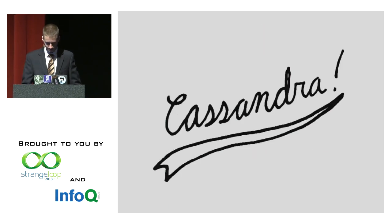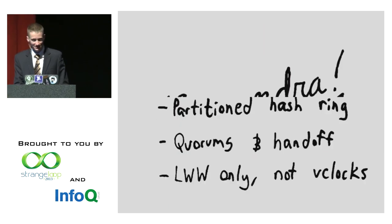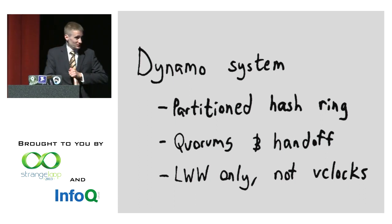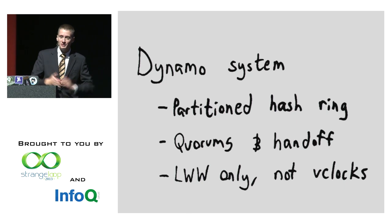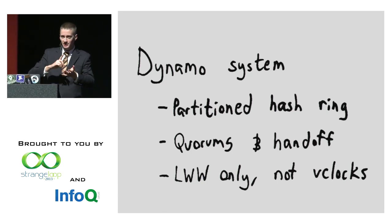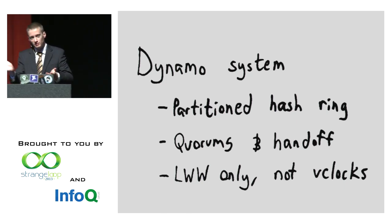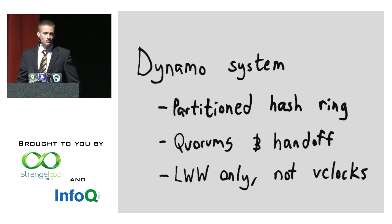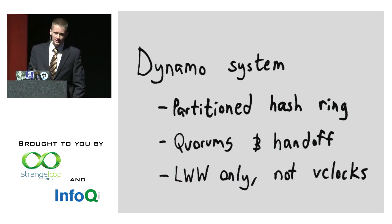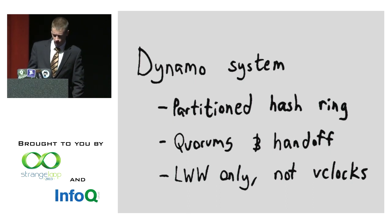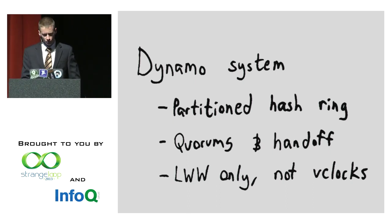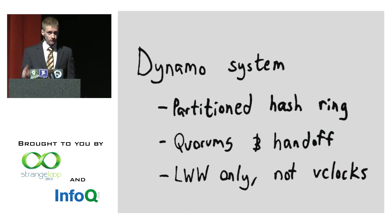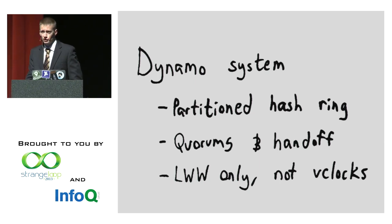Moving on to Cassandra — everybody asked for this one after the last talk. Cassandra is a Dynamo system with a hash ring: keys get hashed into a space, the space is carved into chunks handed to different nodes. It uses hinted handoff, quorums, and active anti-entropy to repair — looks just like Riak, Voldemort, or Dynamo. But unlike the Dynamo paper, it doesn't use vector clocks. It uses last-write-wins only.